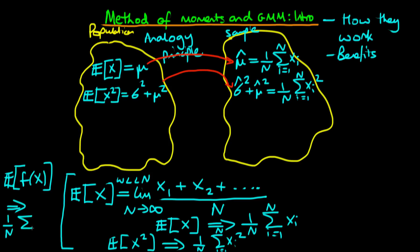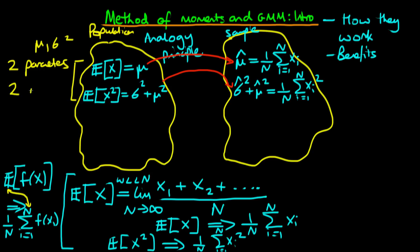Whenever we see an expectations operator in the population condition, we just replace it by 1 over n times the sum in our sample. In both of these cases, we have two parameters to estimate — mu and sigma squared — and we have two population moment conditions. Because we have two equations and two moment conditions, our solutions are identified; in other words, we have exact solutions for our estimators mu hat and sigma hat squared.